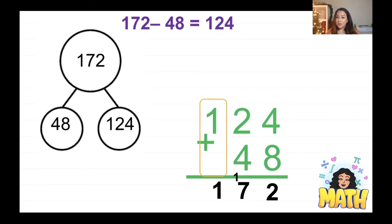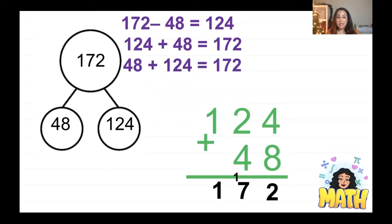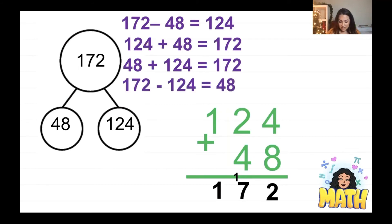Does this number bond work like a fact family? It does. I can write 124 plus 48 equals 172, or 48 plus 124 equals 172. And when I subtract, I take the whole and subtract one part to get the other part. Isn't that amazing?